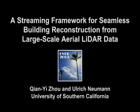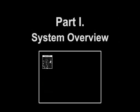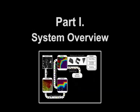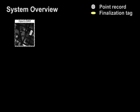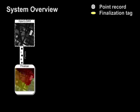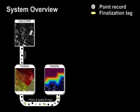We present an automatic building reconstruction system to create large urban models from hundreds of millions of aerial LiDAR points. Our system contains five individual modules. The input LiDAR data first goes into a pre-processing module called Finalizer, which inserts finalization tags and sets up the indexing structure for streaming processing. The classifier then takes all the point records and classifies vegetation points from building and ground.